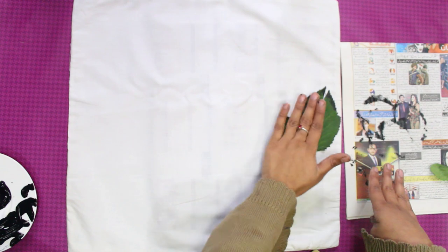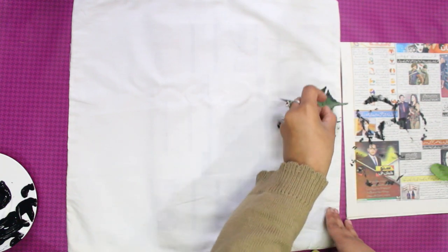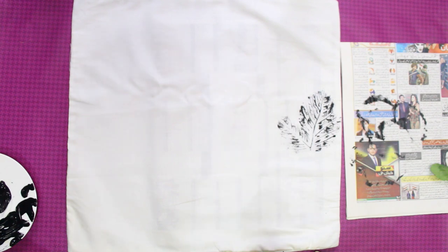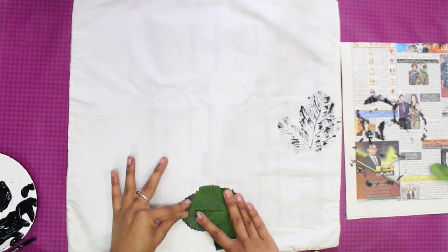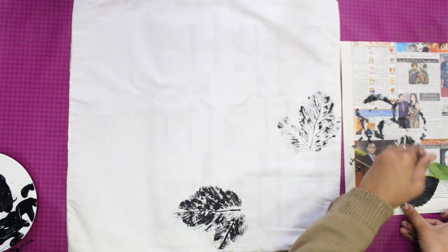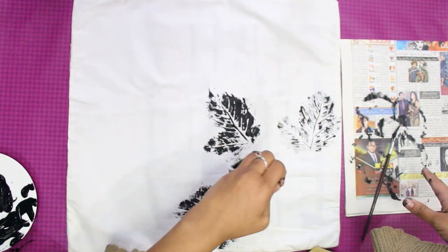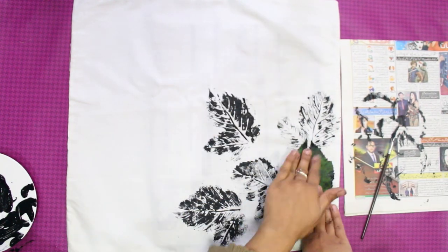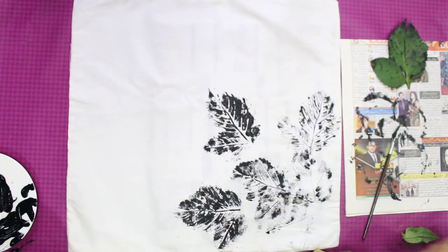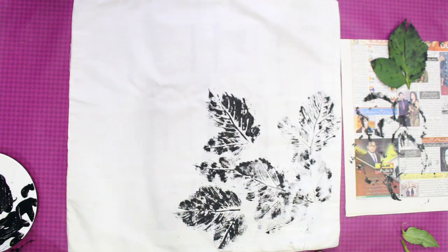Press gently to get a print. Form a pattern you like. I just stamp on one corner of the cushion and it's done.